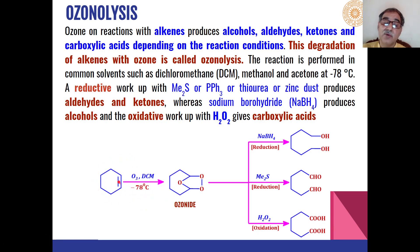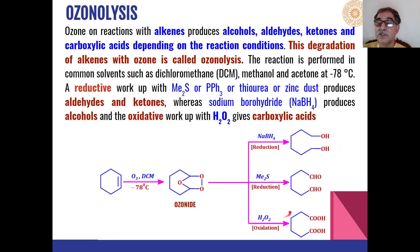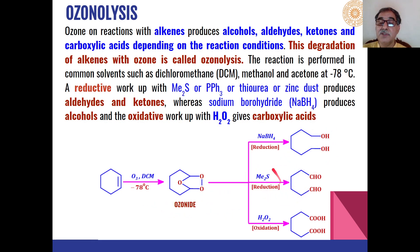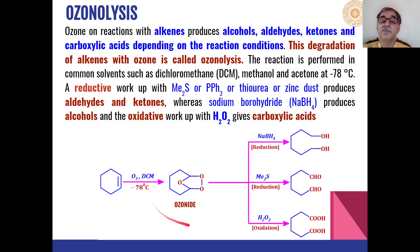Writing the product from the substrate is straightforward. Knowing these conditions: sodium borohydride gives alcohols, dimethyl sulfide gives aldehydes, and hydrogen peroxide gives carboxylic acids. Simply break the double bond, put a carbonyl at both ends, and write the carboxylic acid if hydrogen peroxide is used. If sodium borohydride is used, break the bond and add a hydroxyl group at both ends. If dimethyl sulfide is used, break the bond to give a ketone plus aldehyde.